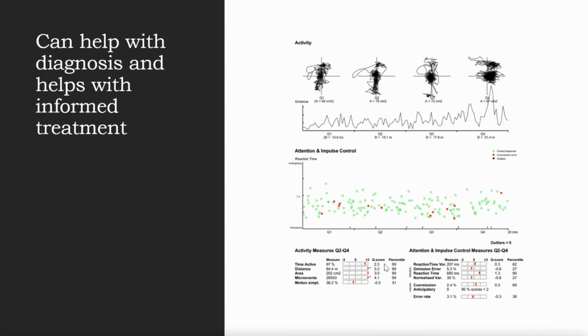From the center of the screen, this individual's head is moving around quite a bit. You see the distance moved and how there's more movement over time. Q1, Q2, Q3, and Q4 are just different sections of your test. In your attention and impulse control, you see the graph that looks slightly confusing, but you can see they have correct responses, commissions, so incorrect responses, and your outliers. There's no outliers in this particular case.